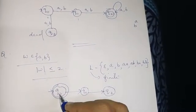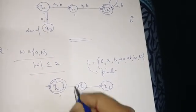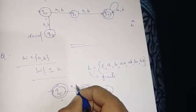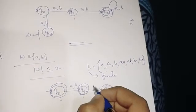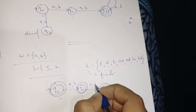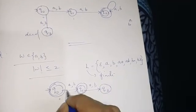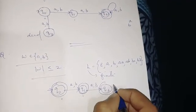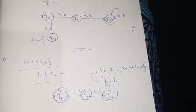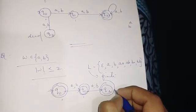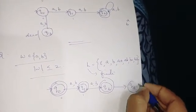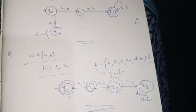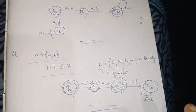We accept the start state and the final state. Length 0 is accepted, then length 1, then we accept the final state for length 2. So Q0, Q1, Q2 are all final states. This is the corresponding DFA.